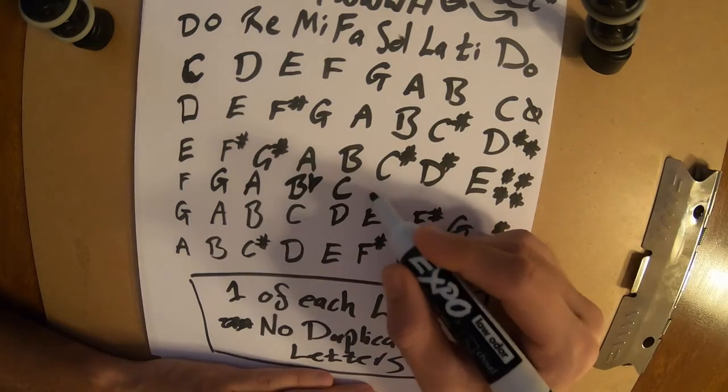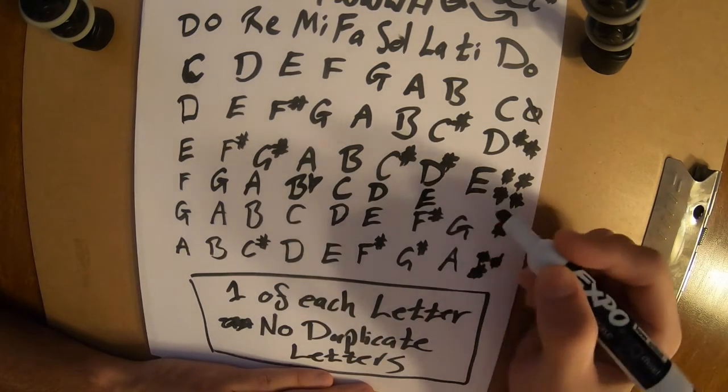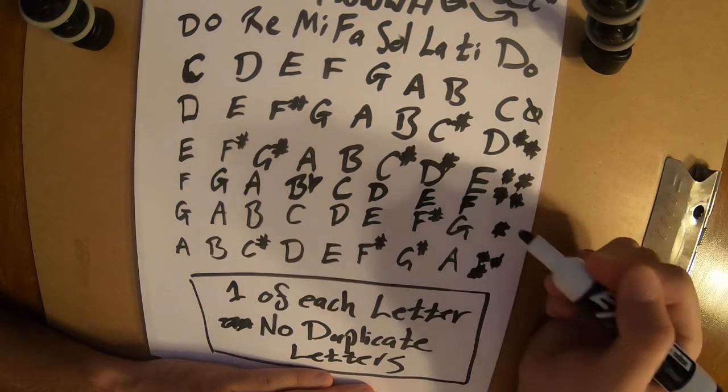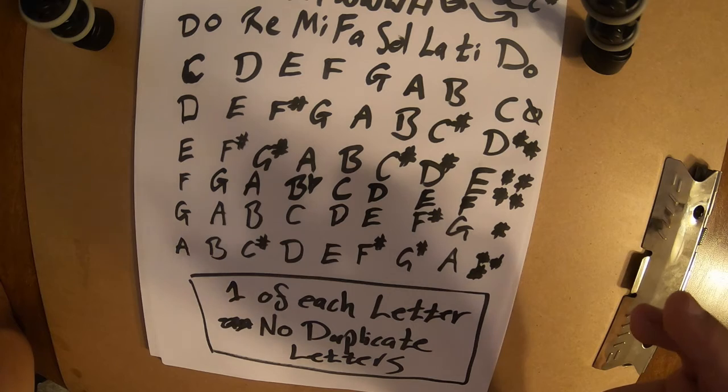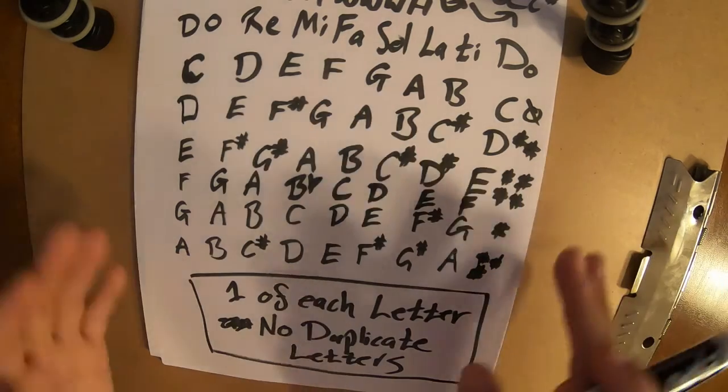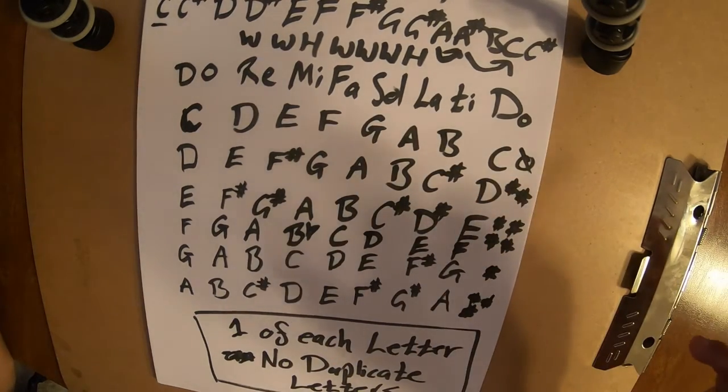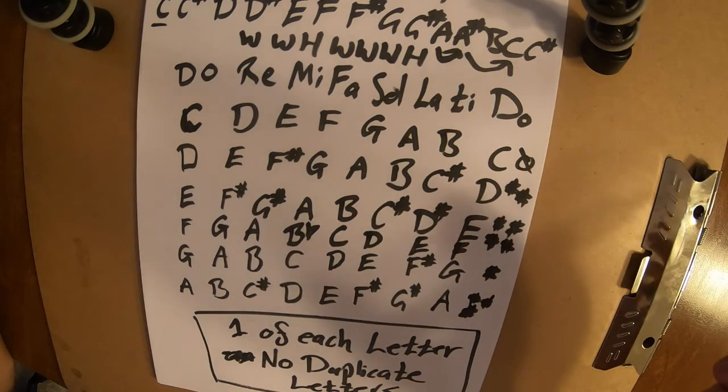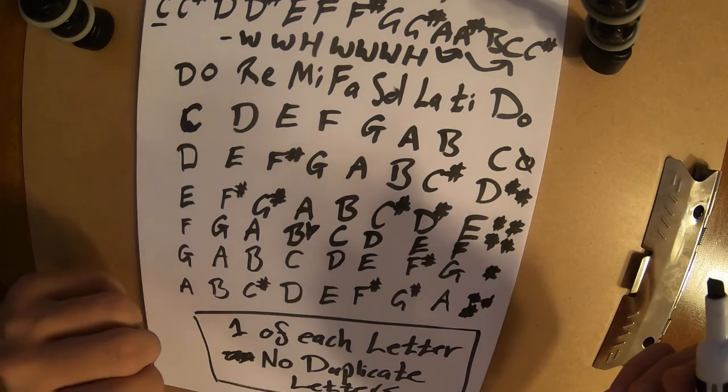All right. So from C, we have a whole step to D. D, we have a whole step to E. And E, we have a half step back to F. Those are the musical keys that get used really often.